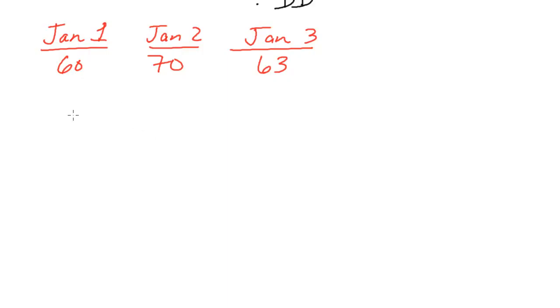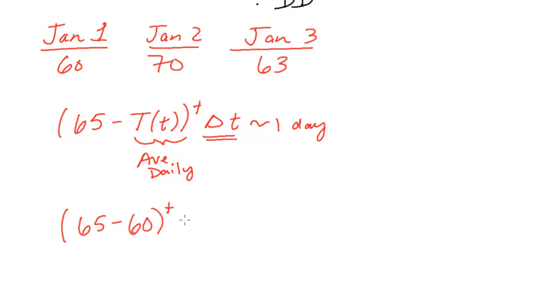So what is the degree day? Again, we're looking at taking this value with a delta t of one day. And we're taking this to be an average daily temperature. So let's go ahead and let's do this. For day one, we had an average daily temperature of 60. So let's do 65 minus 60 when positive times one day.